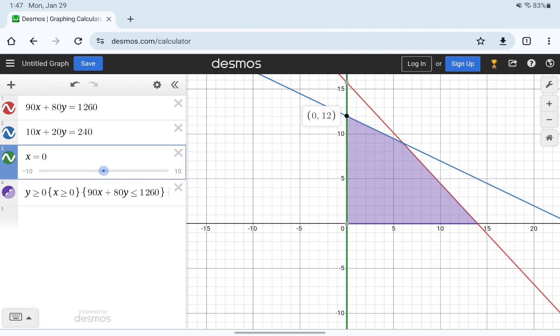We have points of intersection at 0, 12, 6, 9, and 14, 0, as well as 0, 0 at the origin.